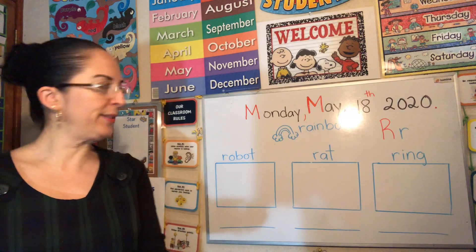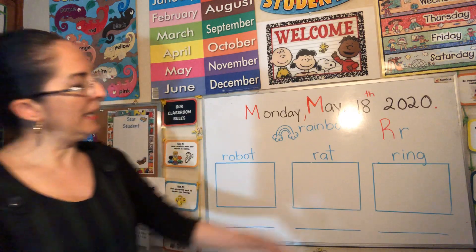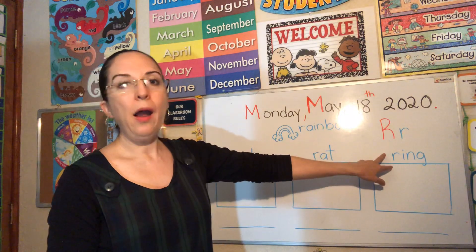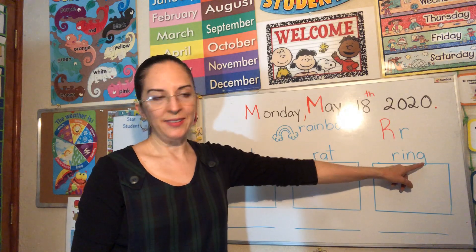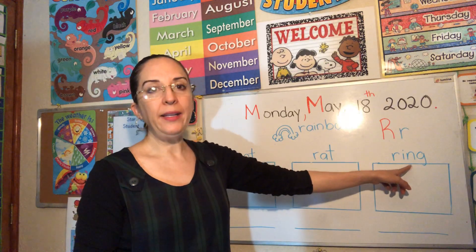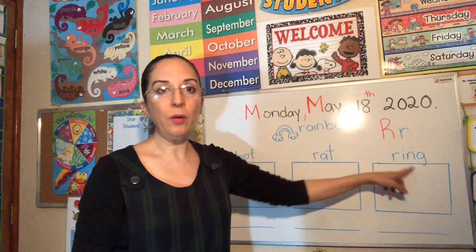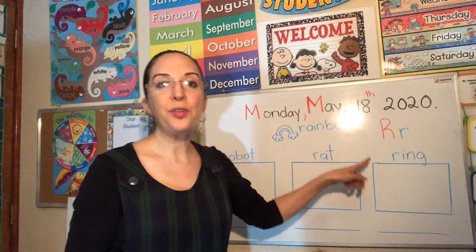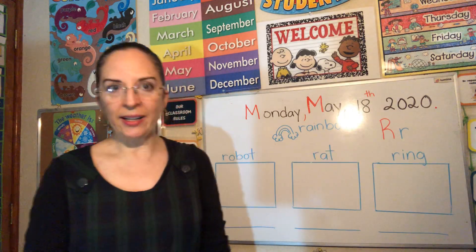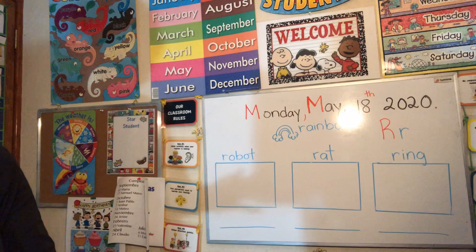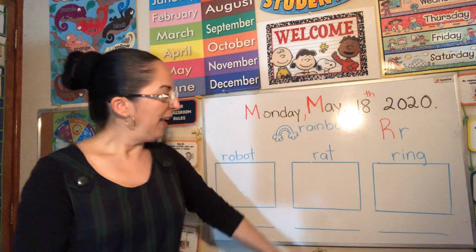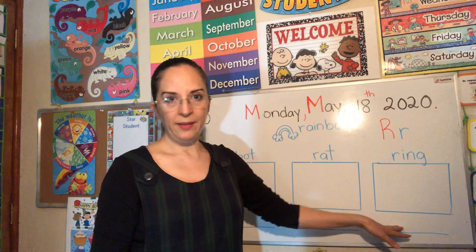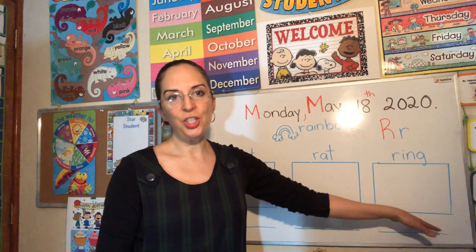Next. Let's spell the word: R-I-N-G. Again: R-I-N-G. Now read the complete word. Ring. Again: ring. Ring. Very good. This is a ring, children. Ring. And write the word ring — the complete word: R-I-N-G. Ring.